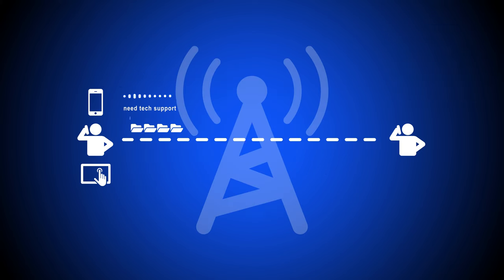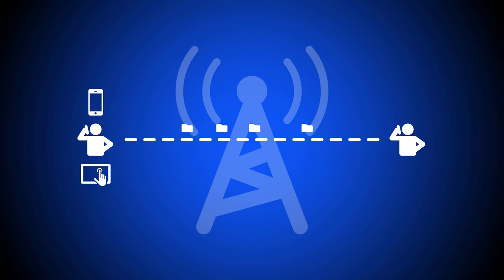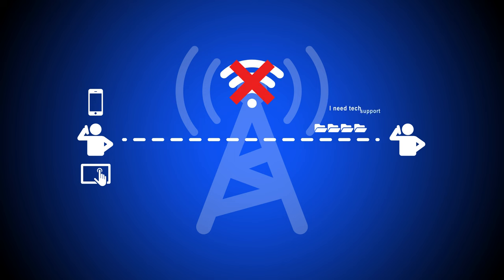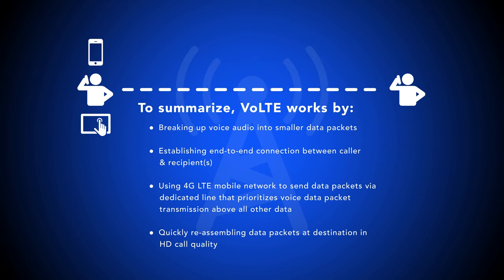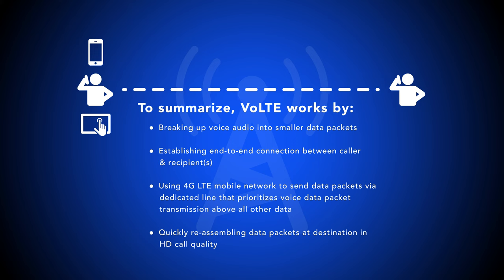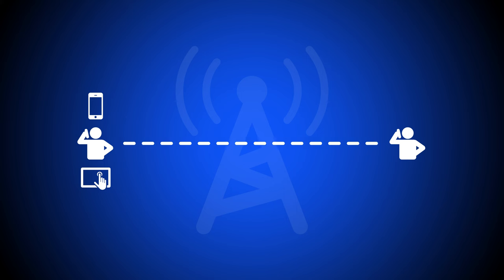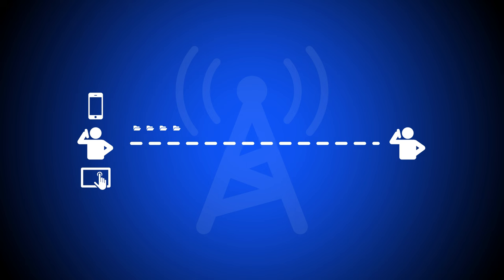Voice over LTE works by transmitting voice data packets via the 4G LTE network, not standard Wi-Fi or broadband internet connections like VoIP. Voice over LTE is based on the IMS Architectural Framework, a multimedia protocol that transmits data packets over the internet instead of circuit switching. Although VoIP and Voice over LTE both compress voice audio into data packets, Voice over LTE packets are smaller and need less bandwidth to reach their destination.